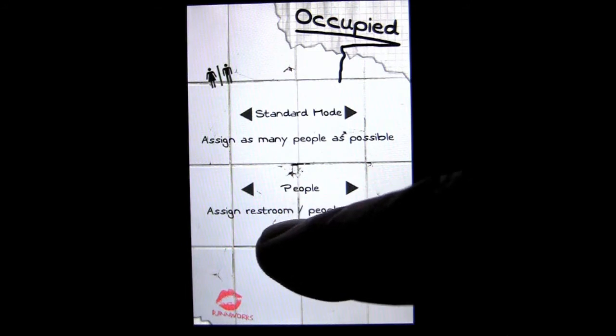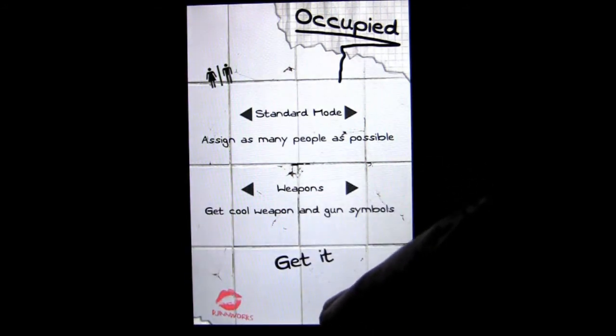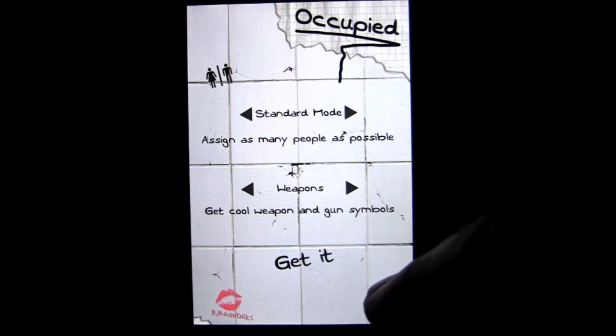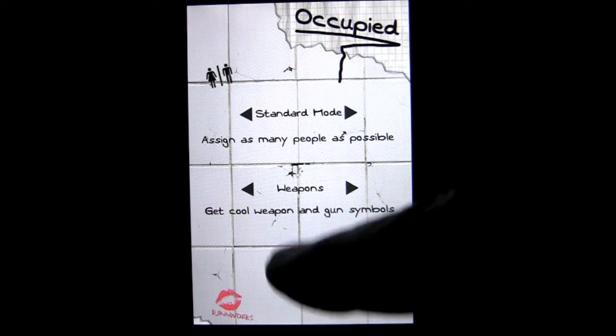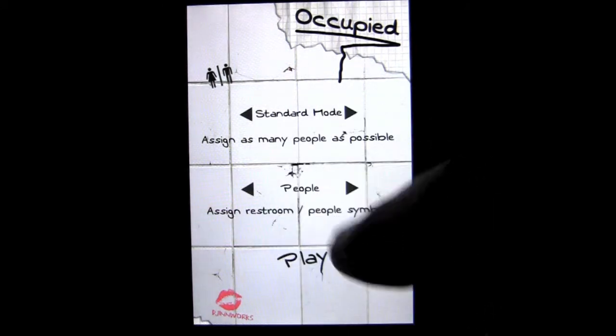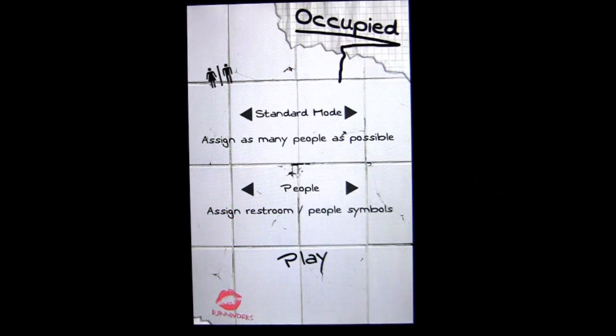We can go ahead and jump into play. There's standard mode and people. You can have weapon and handgun symbols. You can play that I guess, but that's going to cost money. Let's go ahead and use the people. So I guess you play with different stuff there.